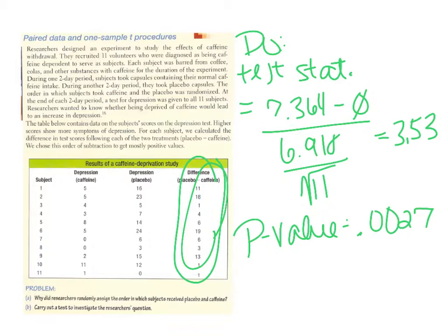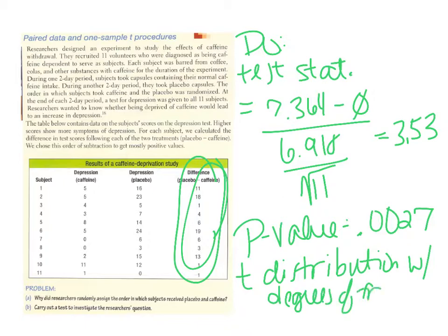I need to make sure I'm reporting that this is a t-distribution with degrees of freedom equaling 10. I need to state the test statistic and report the p-value. I can type these numbers into the calculator and get my test statistic, p-value, and degrees of freedom — but I have to remember to write all of those down and show all of that work.